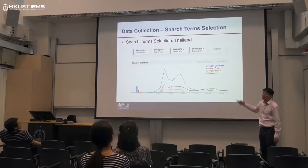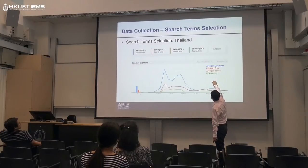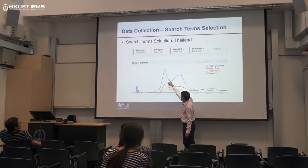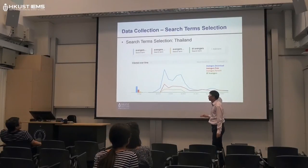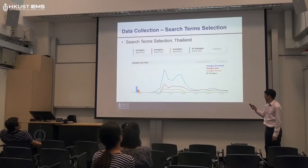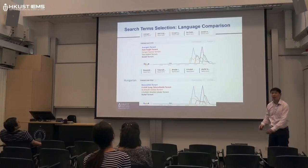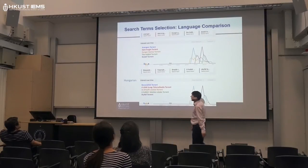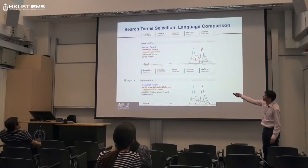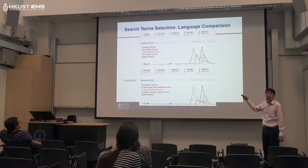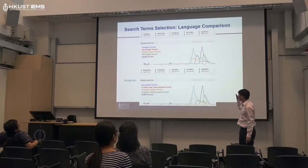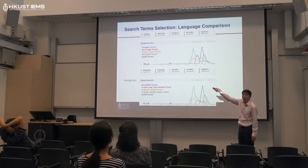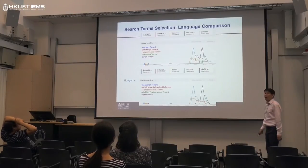For Thailand, we substitute the keywords and see the trends. The torrent keyword is not as high as download, but as I said, 'download' could mean illegal or legal content, so we use 'torrent.' There is also a language issue — people in Hungary might speak Hungarian, but since these are Hollywood movies and even cinema posters use the English name, people in Hungary also search using those English names. So we compare the two graphs for Thailand and Hungary, and they are comparable.